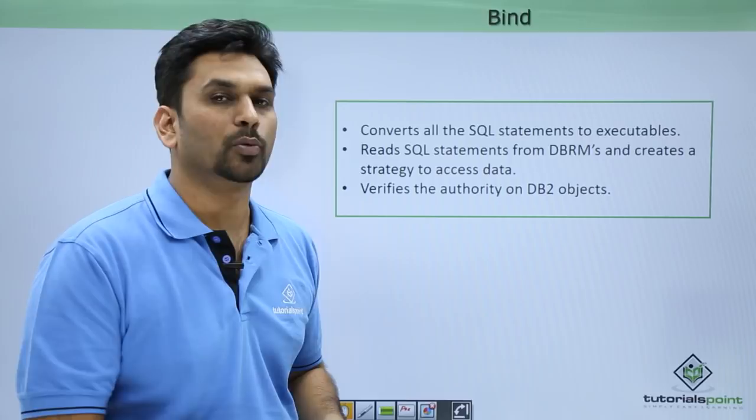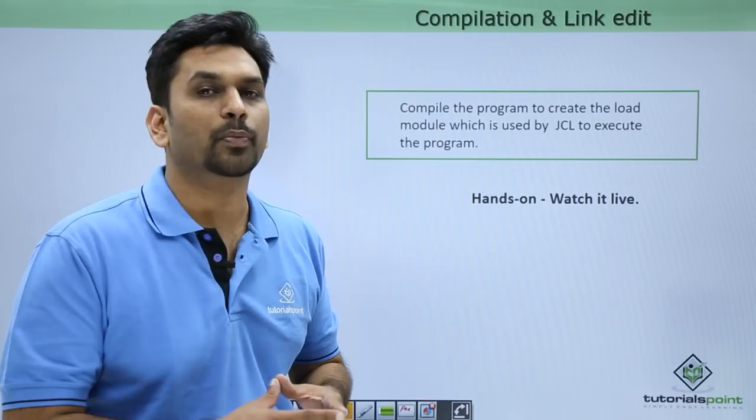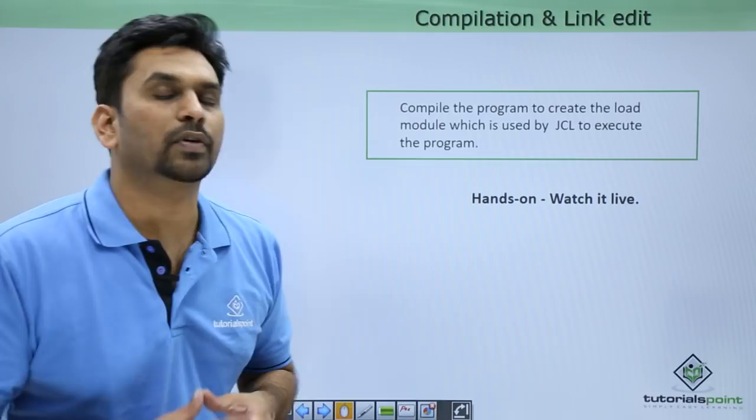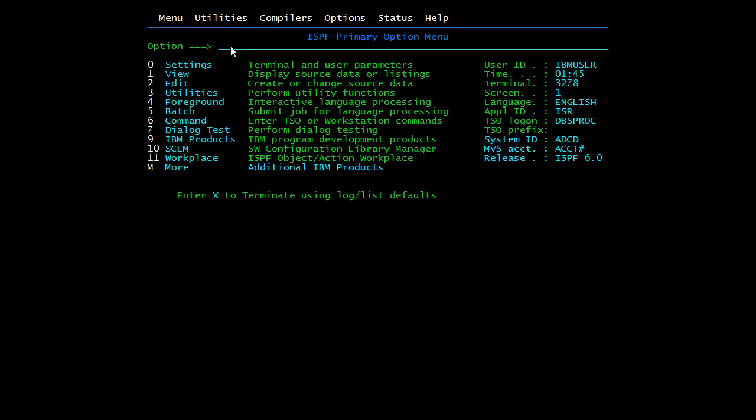The compile and link edit step is the normal step where we compile a normal COBOL program and link edit it. It compiles the program to create the load module, which is used by JCL to execute the program. Now let us see all these functions practically — we will look at the COBOL DB2 program we want to execute and then walk through the execution process.